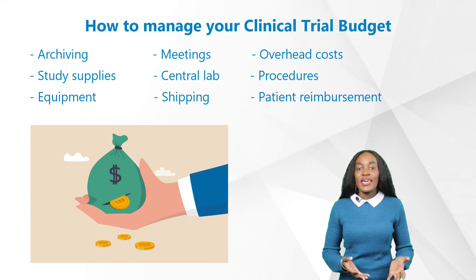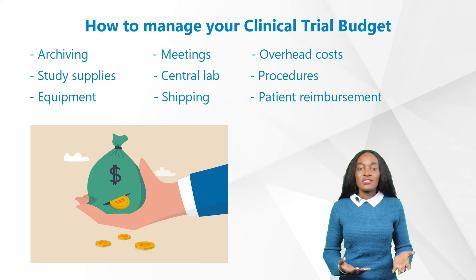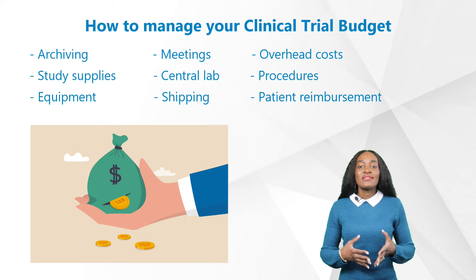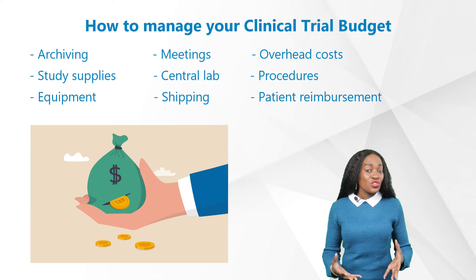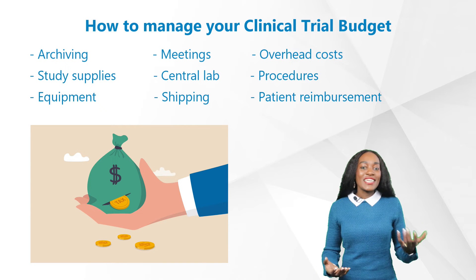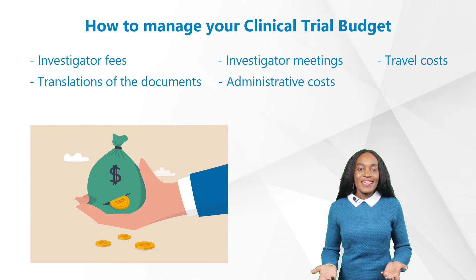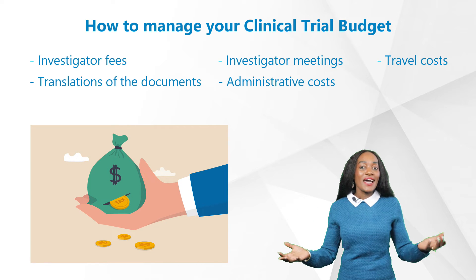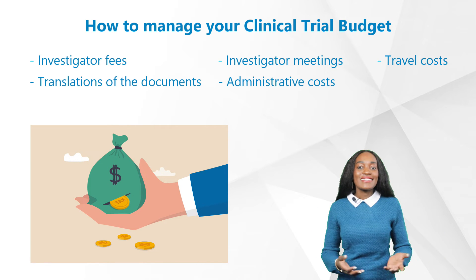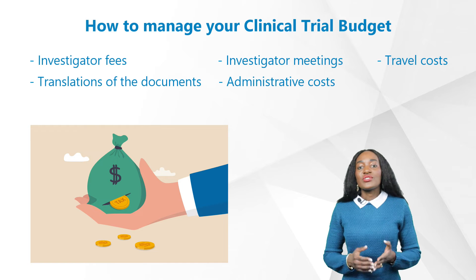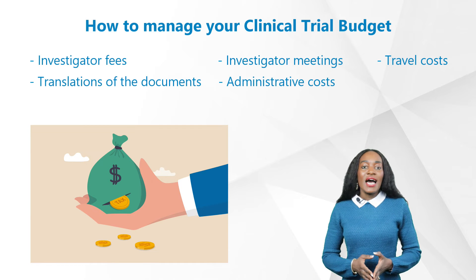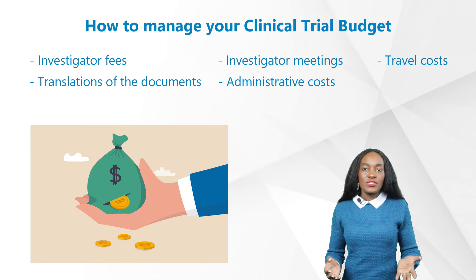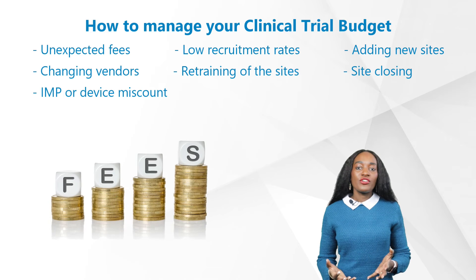You can also budget for biostatistics and medical writing, document management and trial master file archiving, and meetings for the study team to unify their trial activities and ensure a smooth study run. Additionally, expect overhead costs such as patient recruitment, study supplies, central lab procedures, equipment shipping, patient reimbursement, and investigator fees — especially if a private clinic is involved, as costs can be higher. Investigator meetings, travel costs, and translation of documents are also typical overhead items.